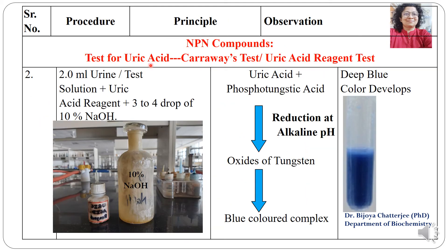The next compound is uric acid, tested by the uric acid reagent test, also known as the Caravase test. Take 2 ml of urine, add uric acid reagent and 2 to 3 drops of 10% NaOH. The reaction occurs in alkaline medium: uric acid plus phosphotungstic acid present in the uric acid reagent gives rise to oxides of tungstate, which are blue in color. A deep blue color develops in alkaline medium.